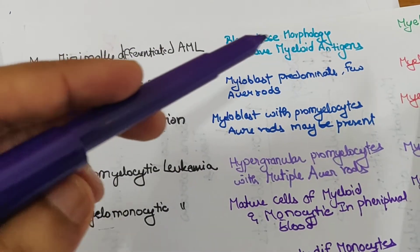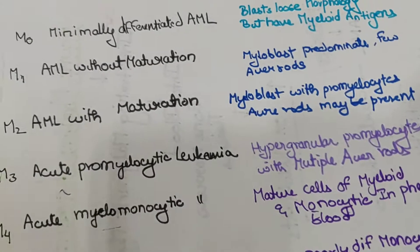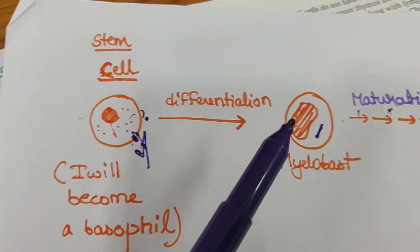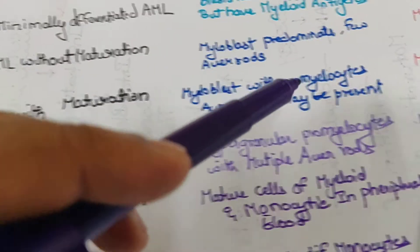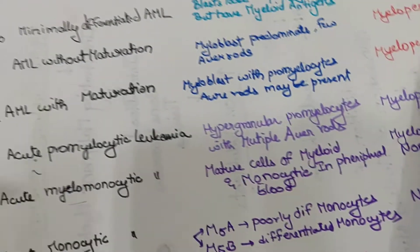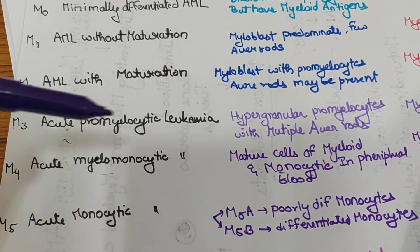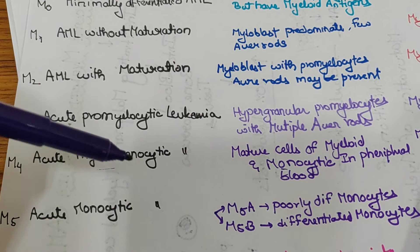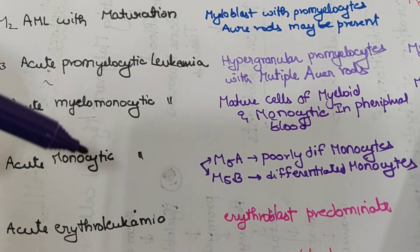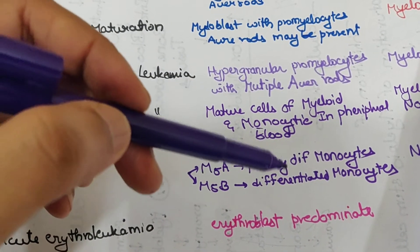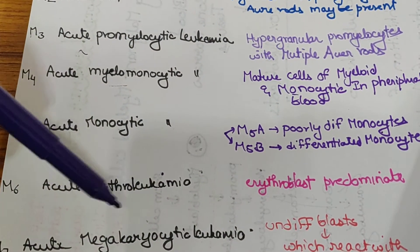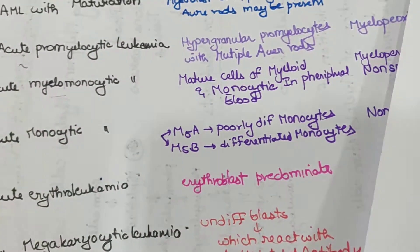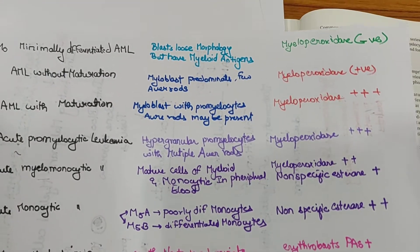To summarize the classification: M0 blasts lose morphology but have myeloid antigens. M1 (without maturation) has predominant myeloblasts; M2 (with maturation) has promyelocytes. M3 is hypergranular acute promyelocytic leukemia. M4 is myelomonocytic with both myeloid and monocytic cells; M5 is monocytic only. M6 is erythro (erythroblasts predominant); M7 is megakaryocytic with undifferentiated blasts reacting with antiplatelet antibodies.